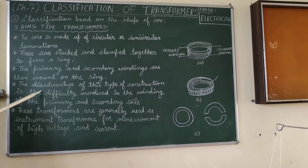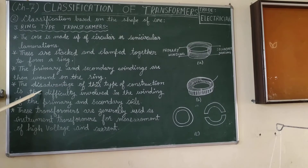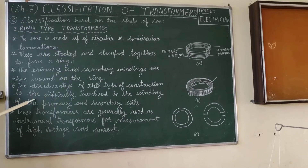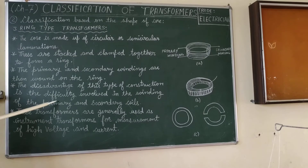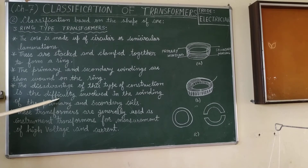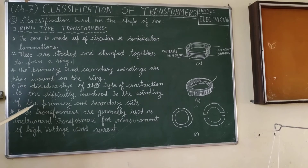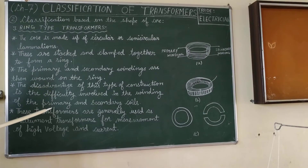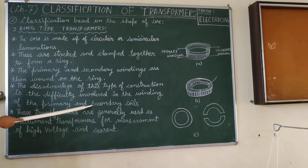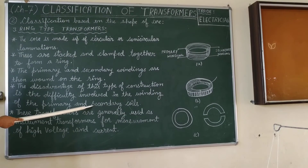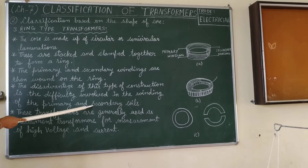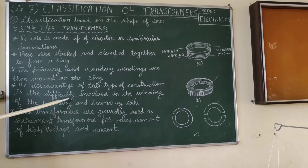The windings in this type are the primary and secondary windings. These windings are very difficult to place due to the circular shape of the core.